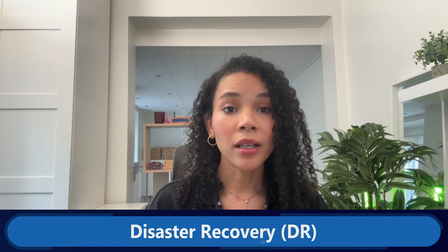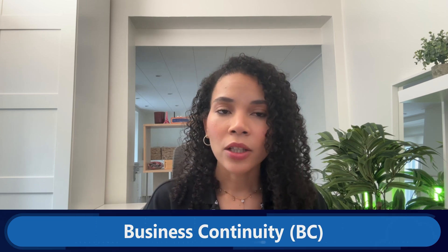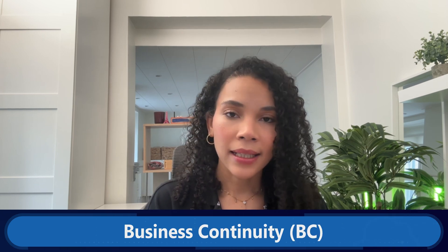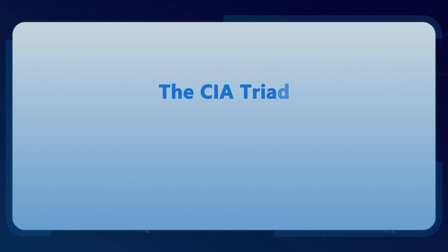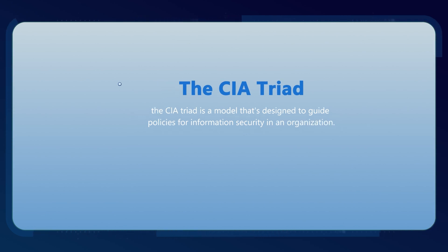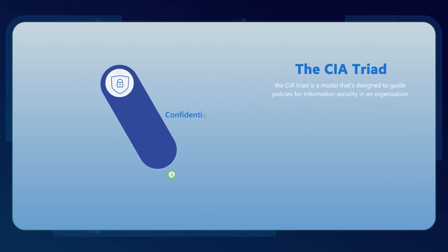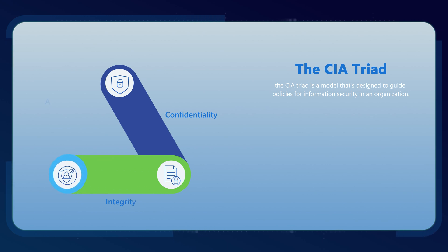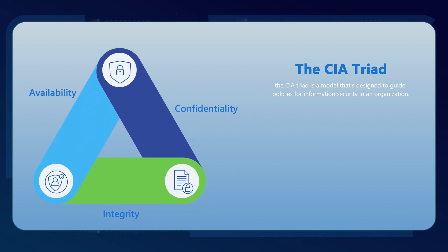In order to understand the link between disaster recovery (DR), business continuity (BC), and security, let's take a deeper look at the CIA triad. The CIA triad is a model designed to guide policies for information security in an organization. It stands for confidentiality, integrity, and availability. Each part is a fundamental security goal.